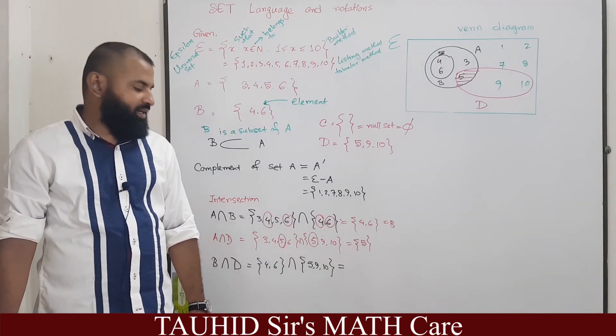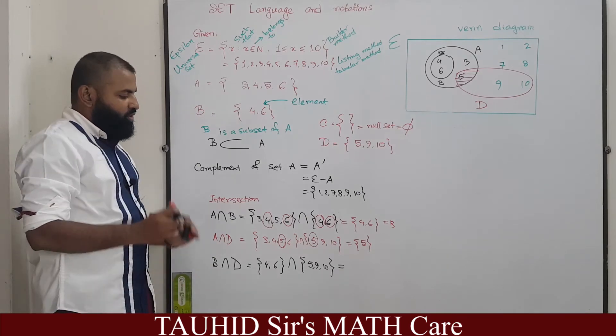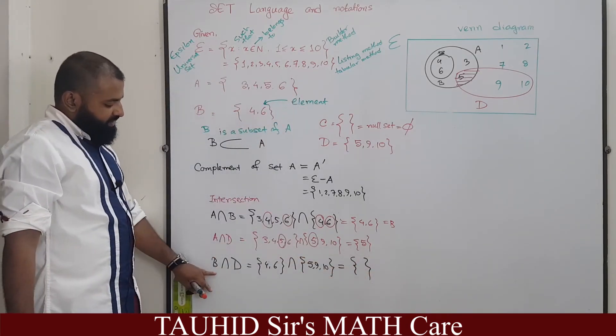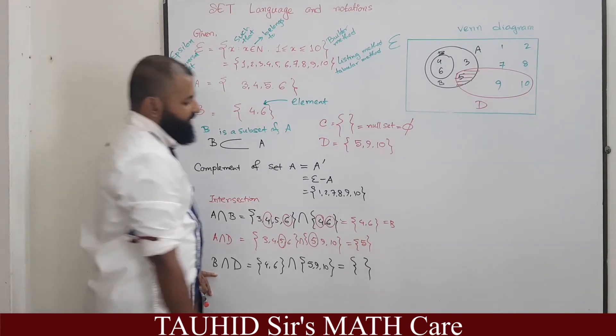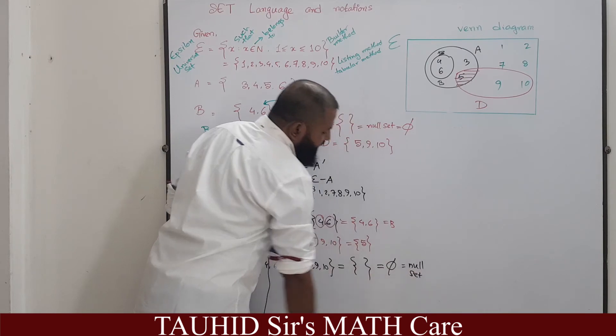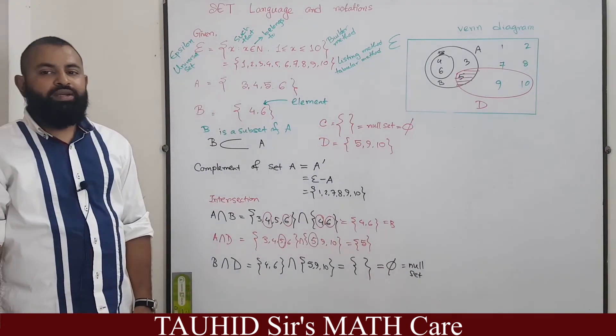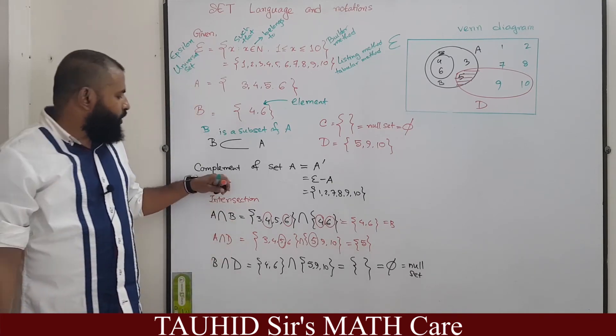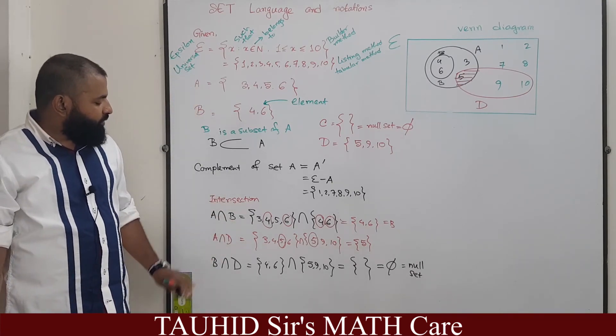Now what is B intersection D? You can clearly see that there is no common in between B and D, so there is no element present here. So the set B intersection D is a null set. What is a null? Which contains no element.